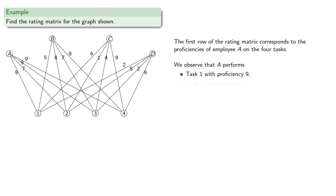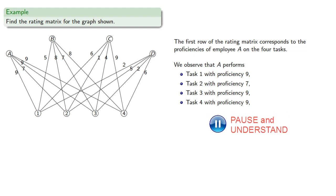Task 2 with proficiency 7, task 3 with proficiency 9, and task 4 with proficiency 9, giving the first row of our rating matrix.